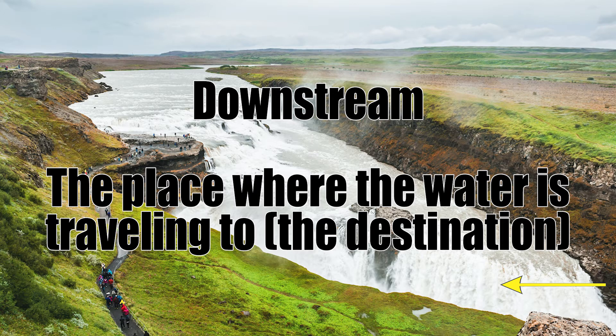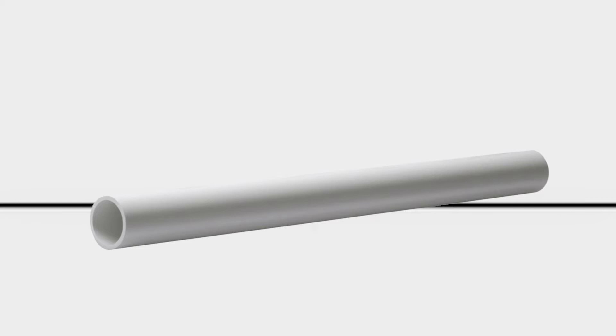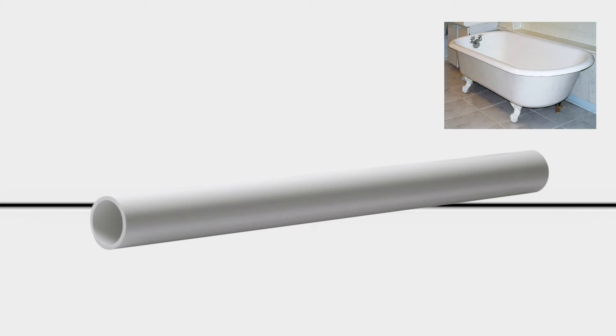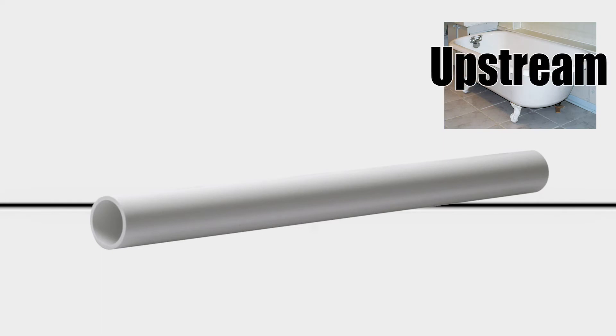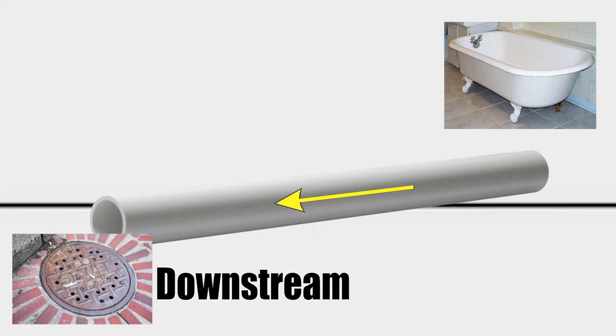Now let's look at this in relationship to a piping system. There's a water source that's going to drain down the pipe — the water source is this bathtub, and that is upstream. It drains down through the pipe and eventually makes it out to the city sewer. That is the lowest point, therefore downstream.